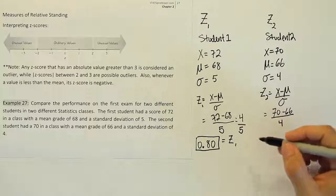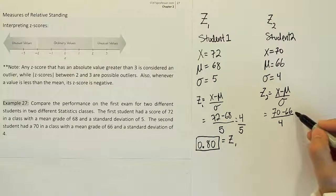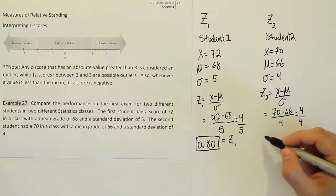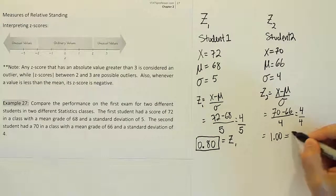Let's consider that against this z-score. 70 minus 66 is also a difference of 4. But we're dividing by 4 at the bottom, so the answer becomes 1.00. And that's z-score 2.